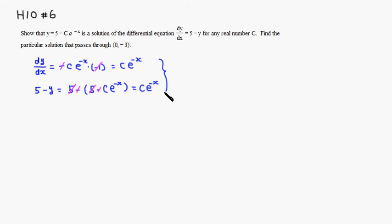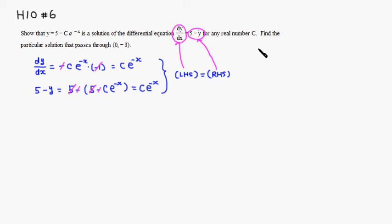Comparing the left-hand side and the right-hand side, we have the left-hand side equaling the right-hand side. The left-hand side is c times e to the negative x, and the right-hand side is 5 minus y, which also equals c times e to the negative x. This verifies that y equals 5 minus c e to the negative x is a solution of this differential equation. This is the general solution. We want to find a particular solution that passes through (0, -3).